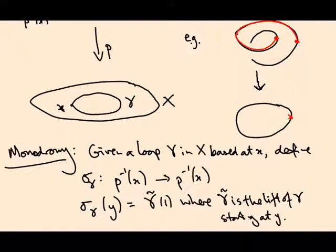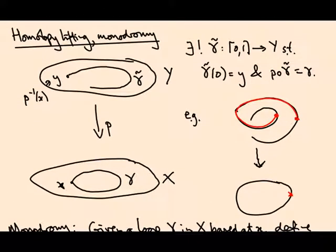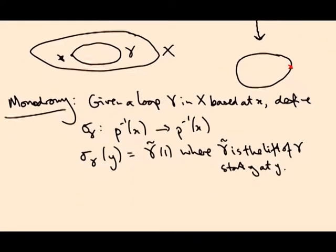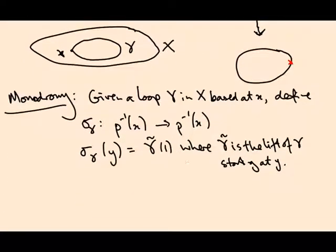Right, that's what this picture means. You start at some point Y, you follow the unique lift for time 1, and you come to some other point that lives over the same point downstairs. And that's the result of applying your monodromy. So we get a permutation, which I'm calling sigma gamma, of the set P inverse X.